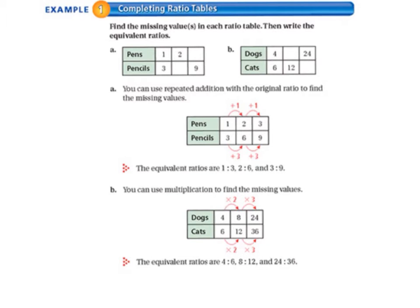Today we'll be starting on page 198 in your math textbook. Example 1: Completing Ratio Tables. Find the missing values in each ratio table, then write the equivalent ratios.